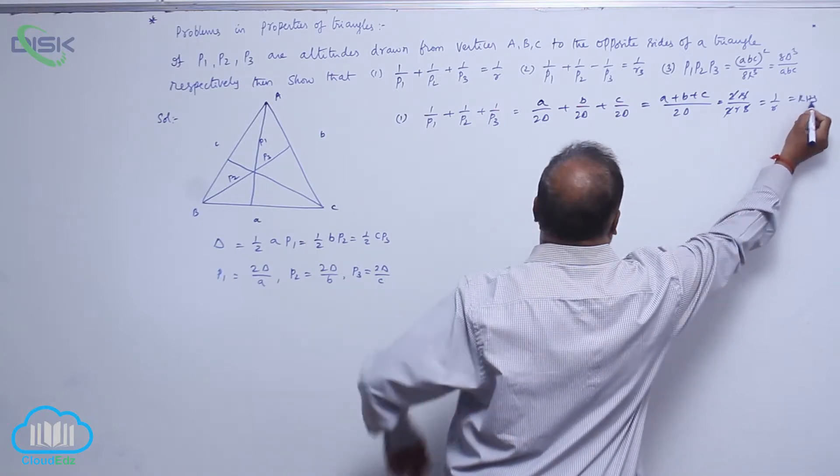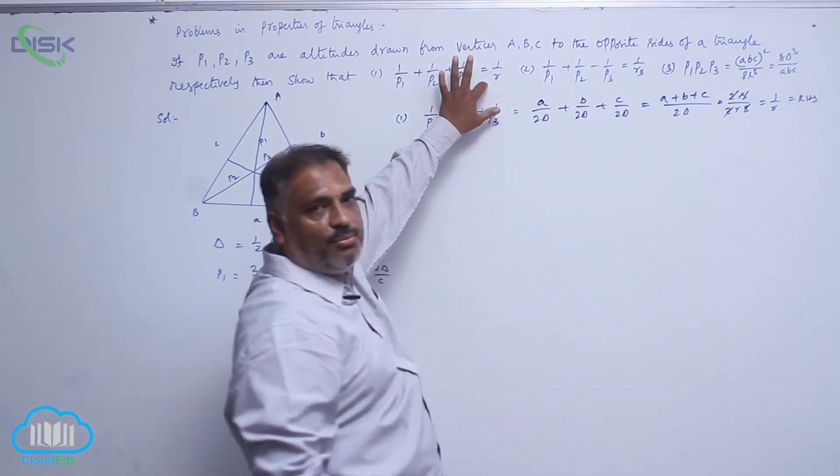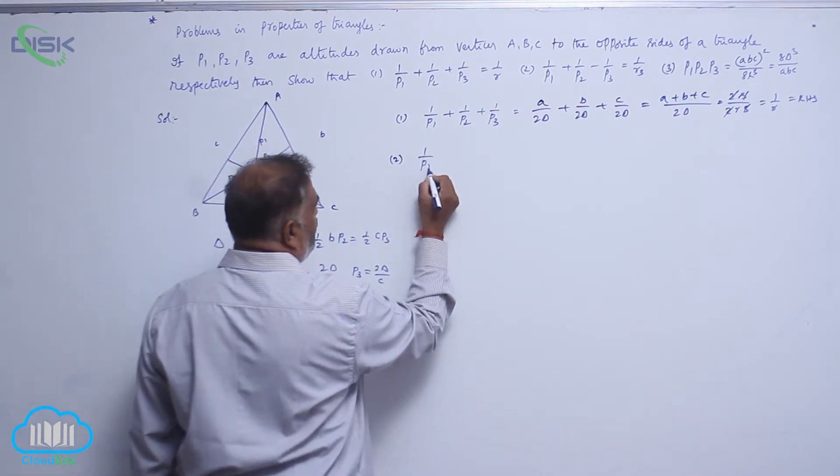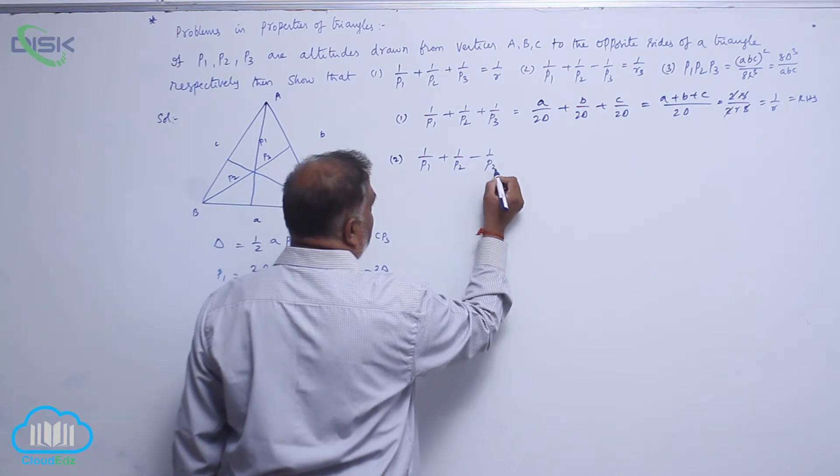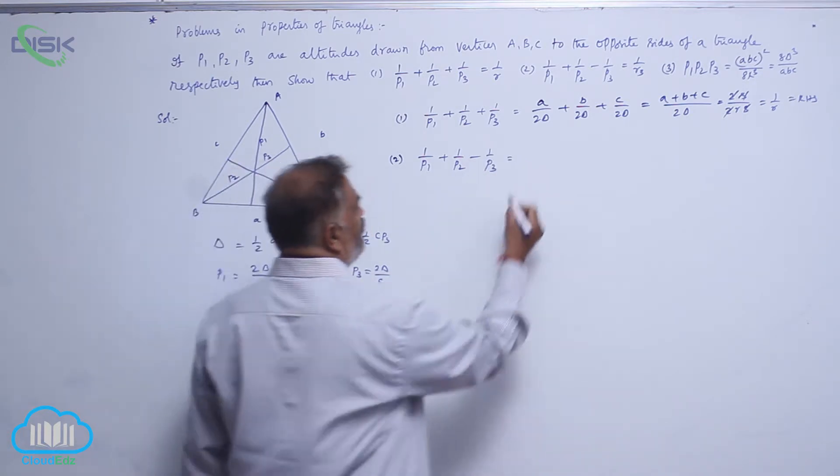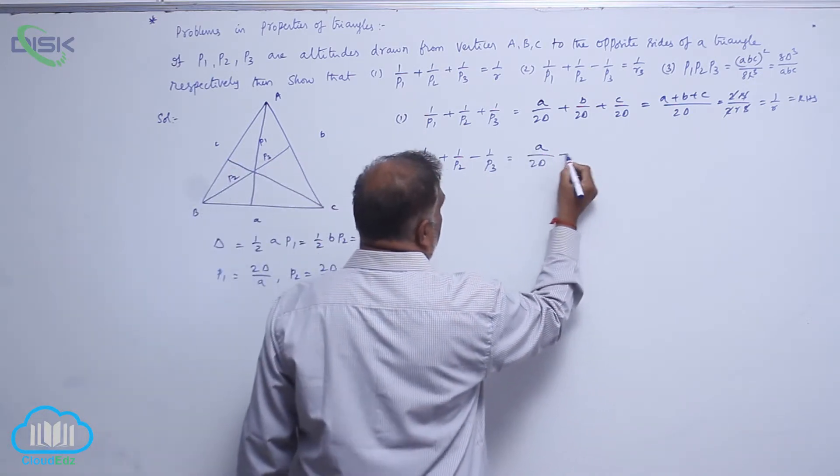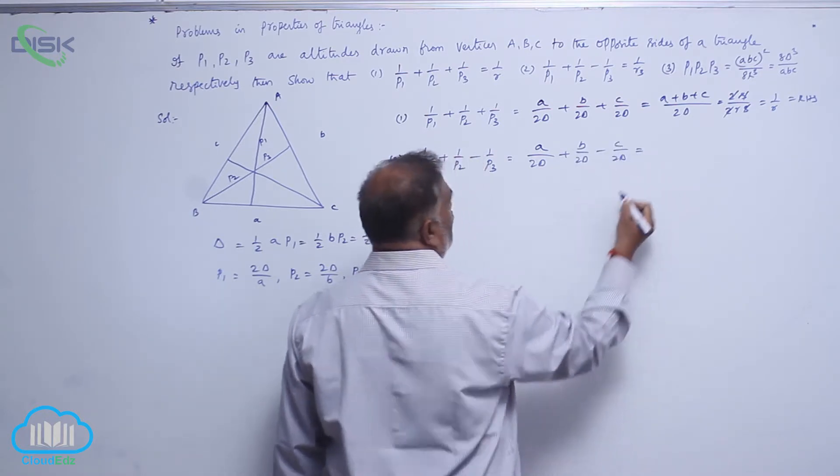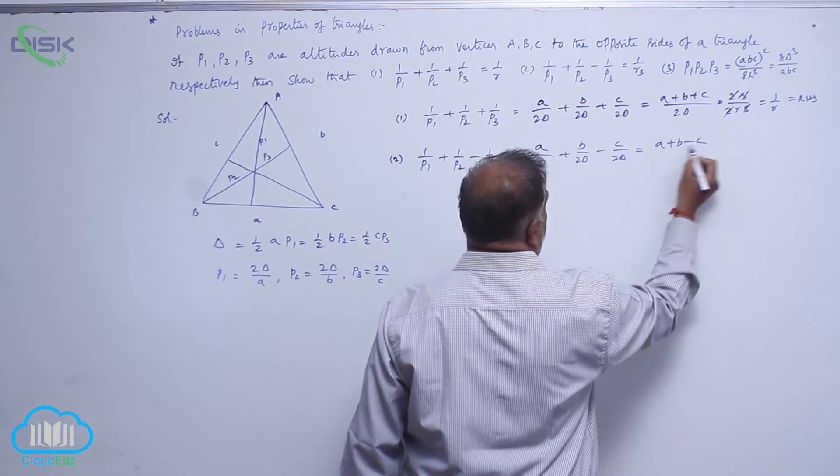Next: 1 by P1 plus 1 by P2 minus 1 by P3. Same approach: A by 2 delta plus B by 2 delta minus C by 2 delta, equal to A plus B minus C by 2 delta.